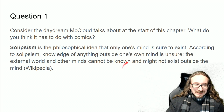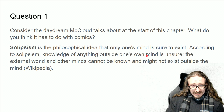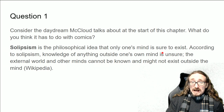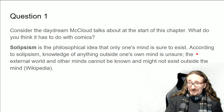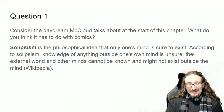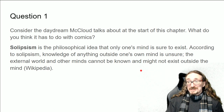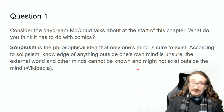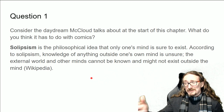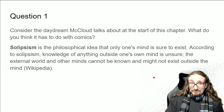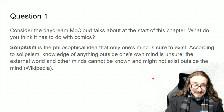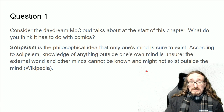From Wikipedia: solipsism is the philosophical idea that only one's mind is sure to exist. You can go back to Descartes for something similar — 'I think, therefore I am.' That's the only thing you can know: that you're a thinking being. For all you know, the senses are fooling you. You could be in the Matrix, this could be an artificial reality, you could be dreaming. Anything outside of your own mind is uncertain — it could be fake. The external world and other minds cannot be known and might not exist outside your own mind.